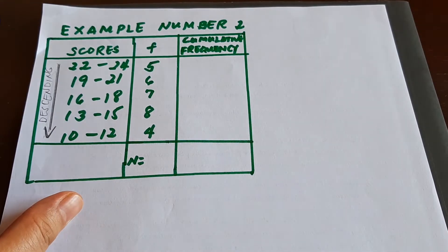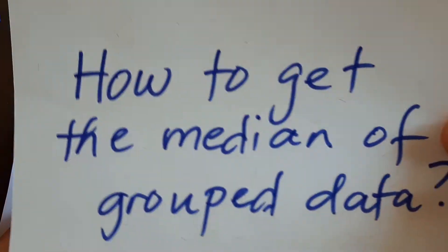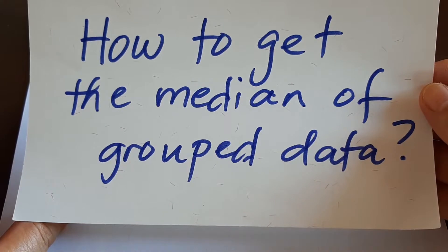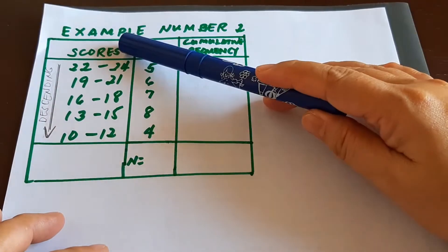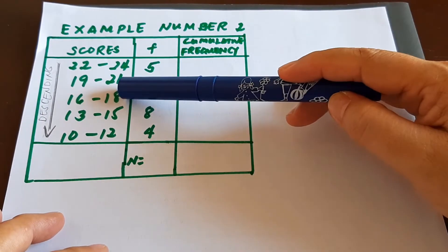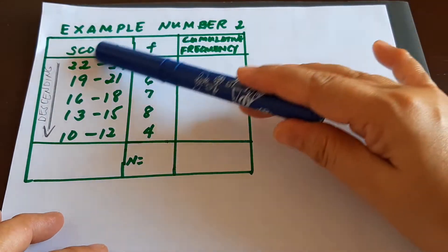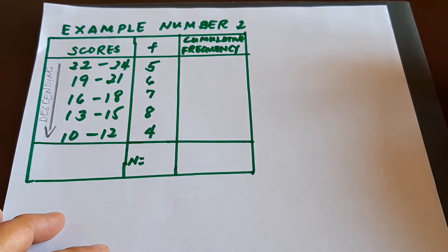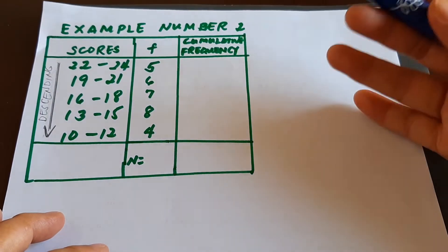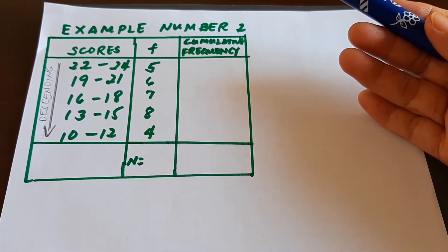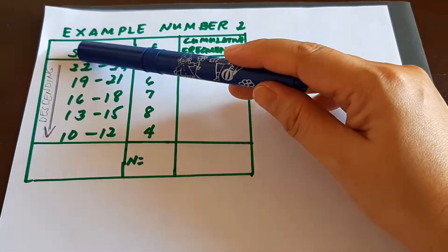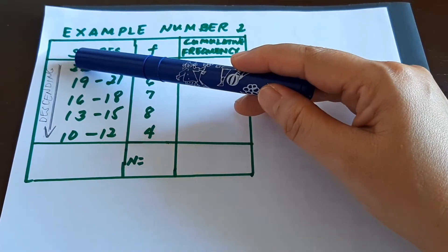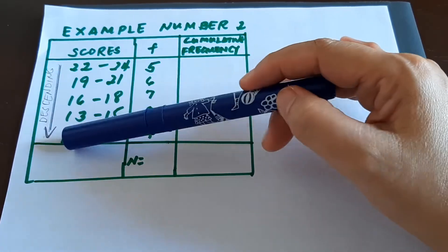We're finding the median of grouped data. Looking at the given example, the scores are 22–24, 19–21, 16–18, 13–15, and 10–12. Notice the arrangement of the classes — it is in descending order, starting with the highest scores going down to the lowest scores.